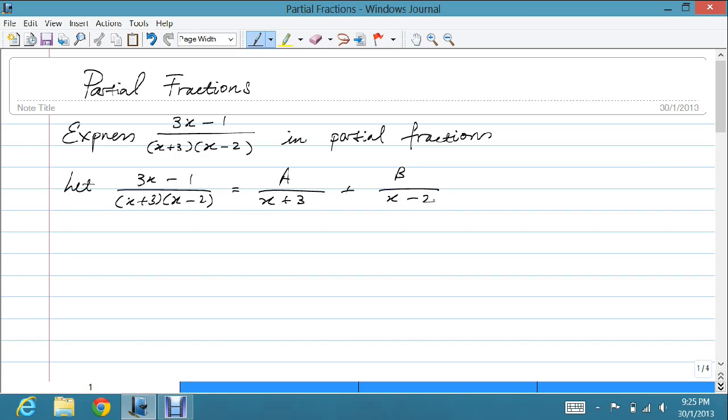What we want to do here is essentially find A and B. Notice that this is an identity. For any value of x, the left hand side must equal the right hand side.